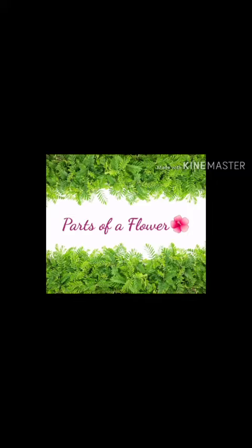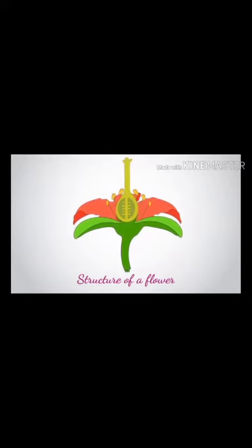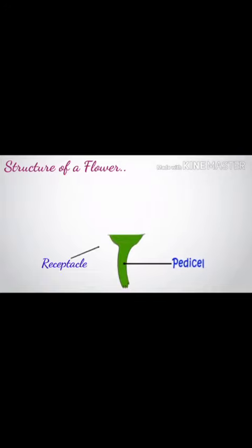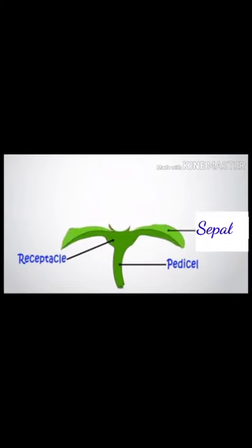Just see such a beautiful flower! Observe for a while — you will see different parts in it. Let's see them one by one, starting from the bottom of the flower. Can you see this green color stem? This is known as the peduncle. Above this there is a swollen part attached to the peduncle, it is called the thalamus, or we can say the receptacle.